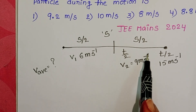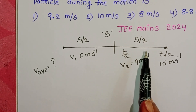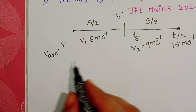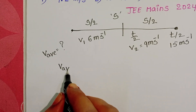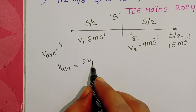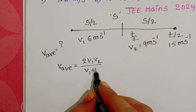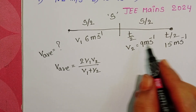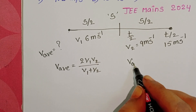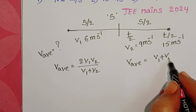When distance is divided into two equal parts, the formula for average speed is: average speed = 2V1V2 / (V1 + V2). When time is divided into two equal parts, the average speed formula is: average speed = (V1 + V2) / 2.